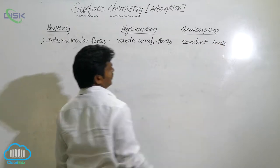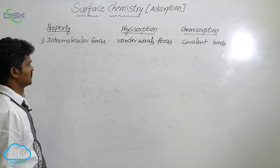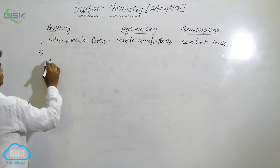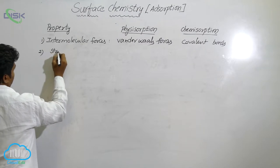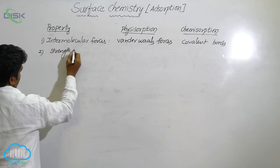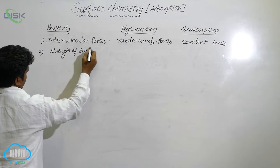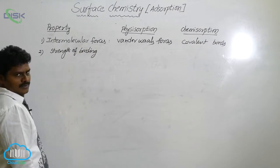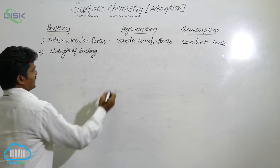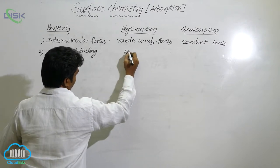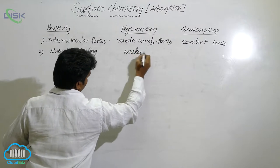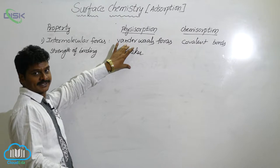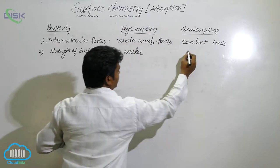Covalent bonds are present in chemisorption. The second property is the strength of bonding. Physisorption is very weak because van der Waals forces are very weak. Chemisorption, on the other hand, is stronger.